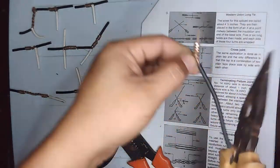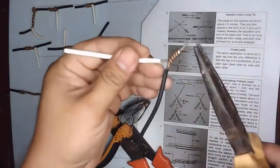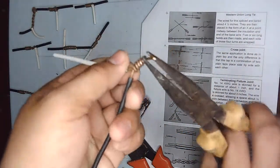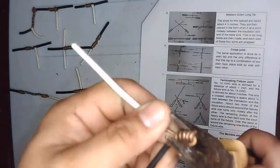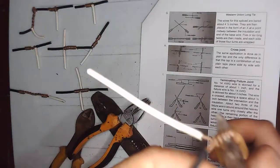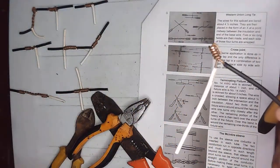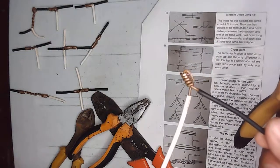So that you cannot pull it out, just simply bend it. And that is what we call the terminating fixture joint.